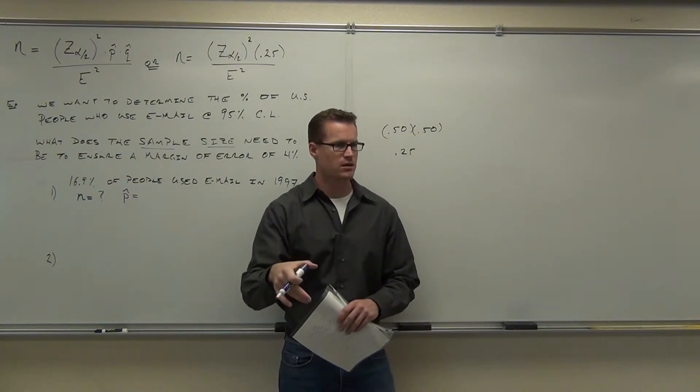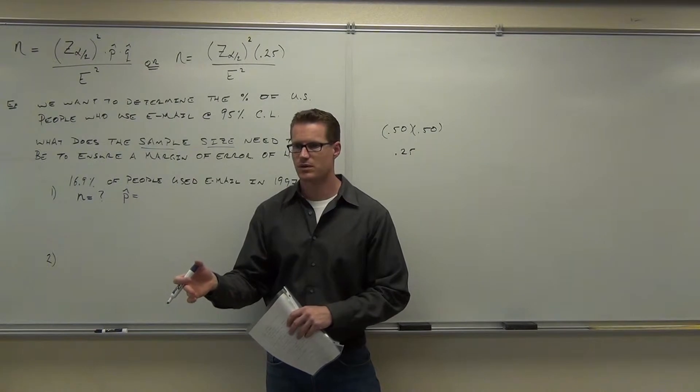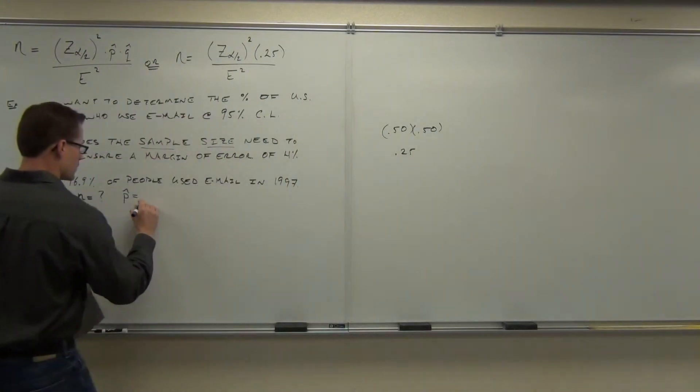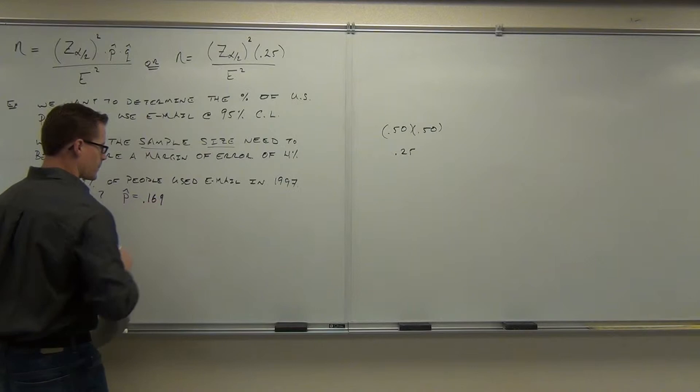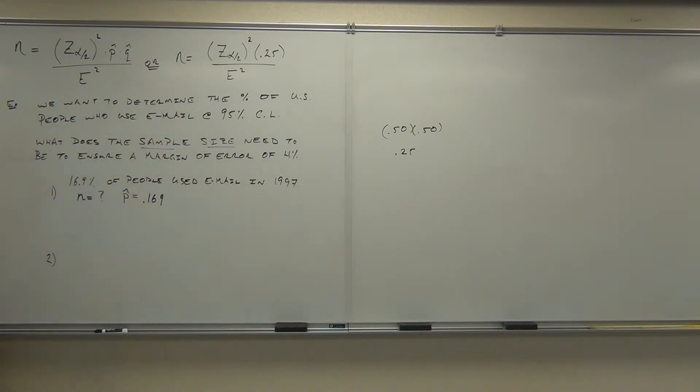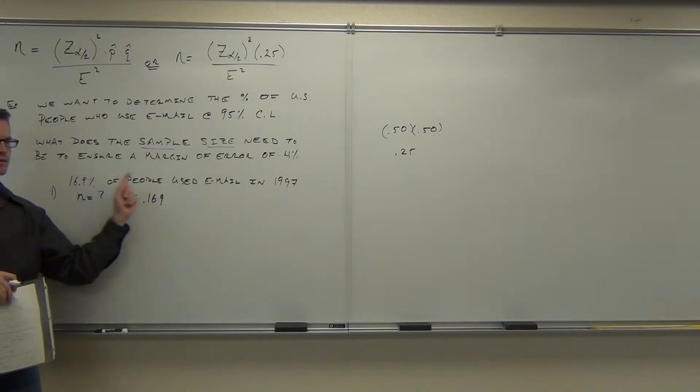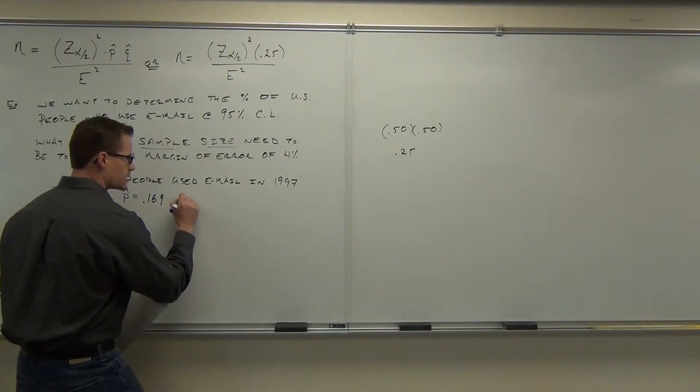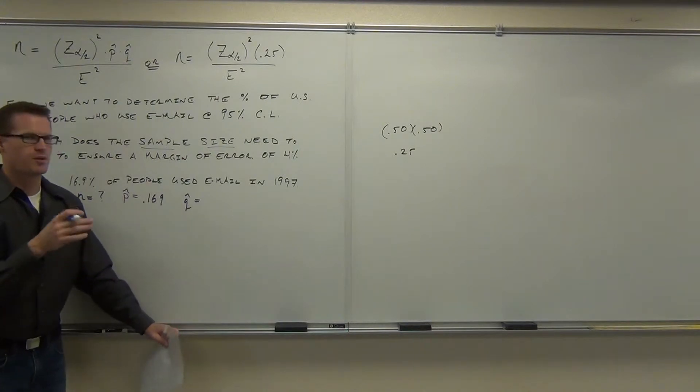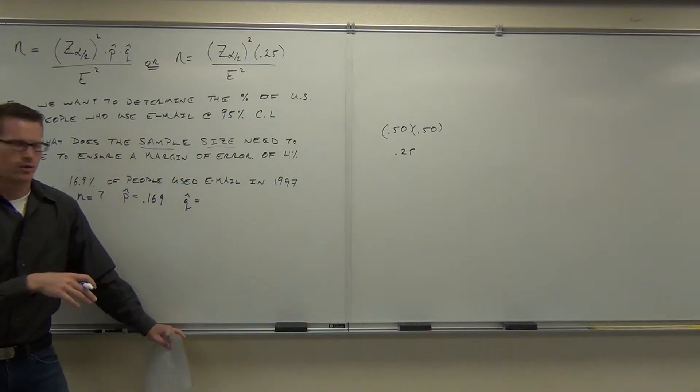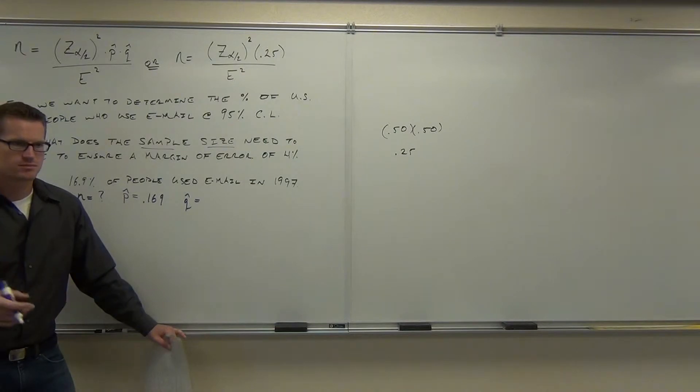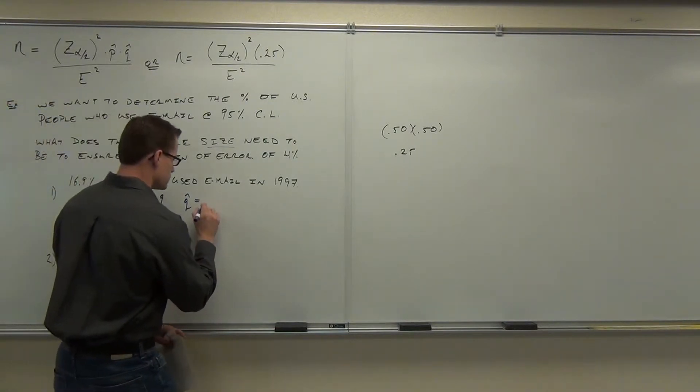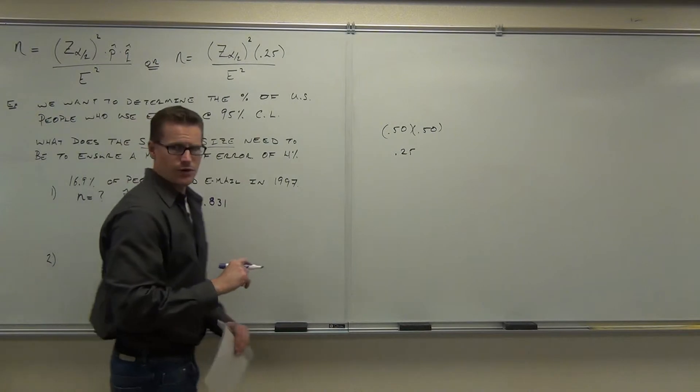Am I going to put 16.9%? Which is what as a decimal? 0.169. I'm getting this from this little piece of information that says, back a long time ago, this was the proportion of success. Or the proportion of people have an email. That was that. Can you figure out Q hat? Hopefully, if you found P hat, you can figure out Q hat. It should be 0.831.